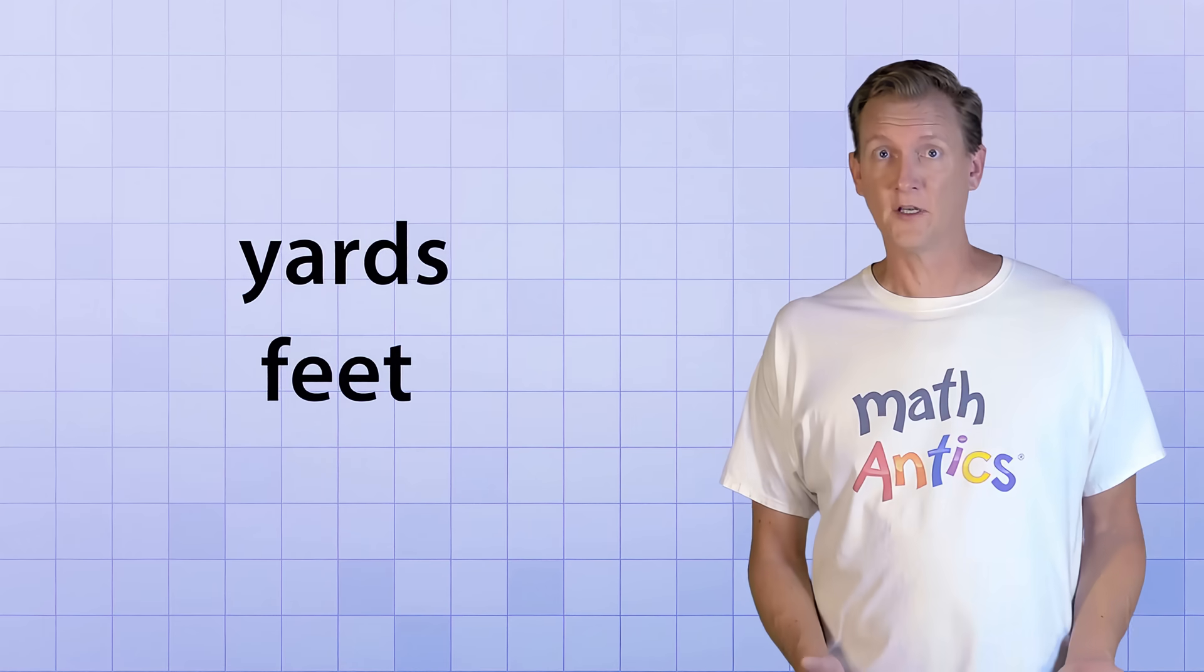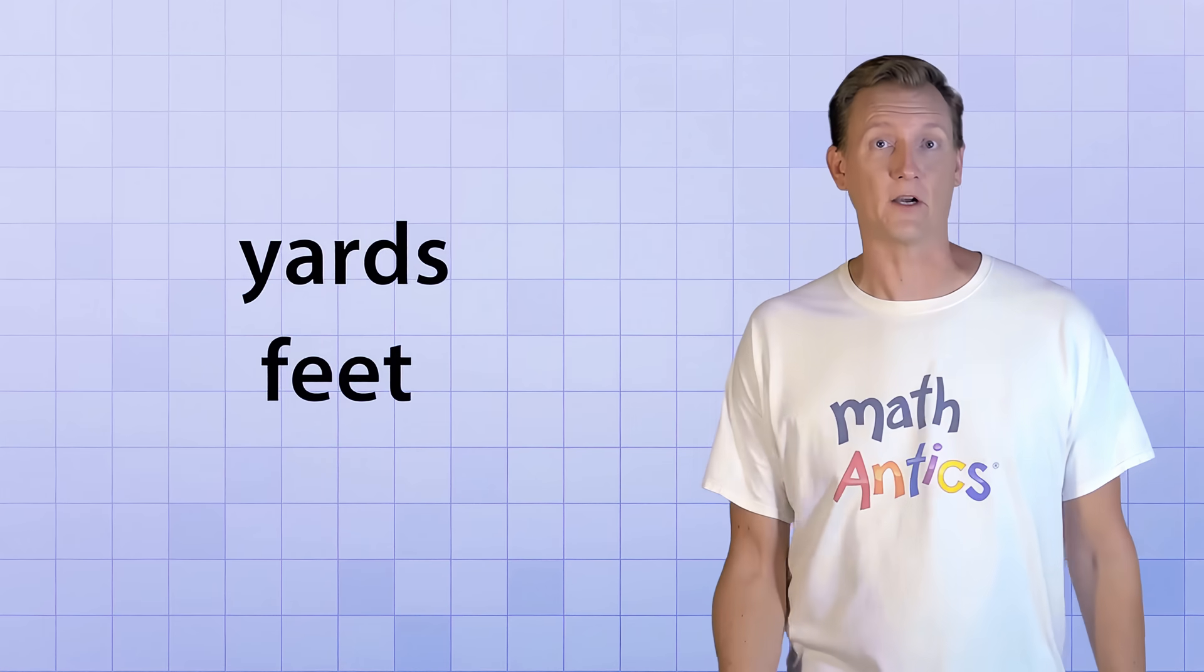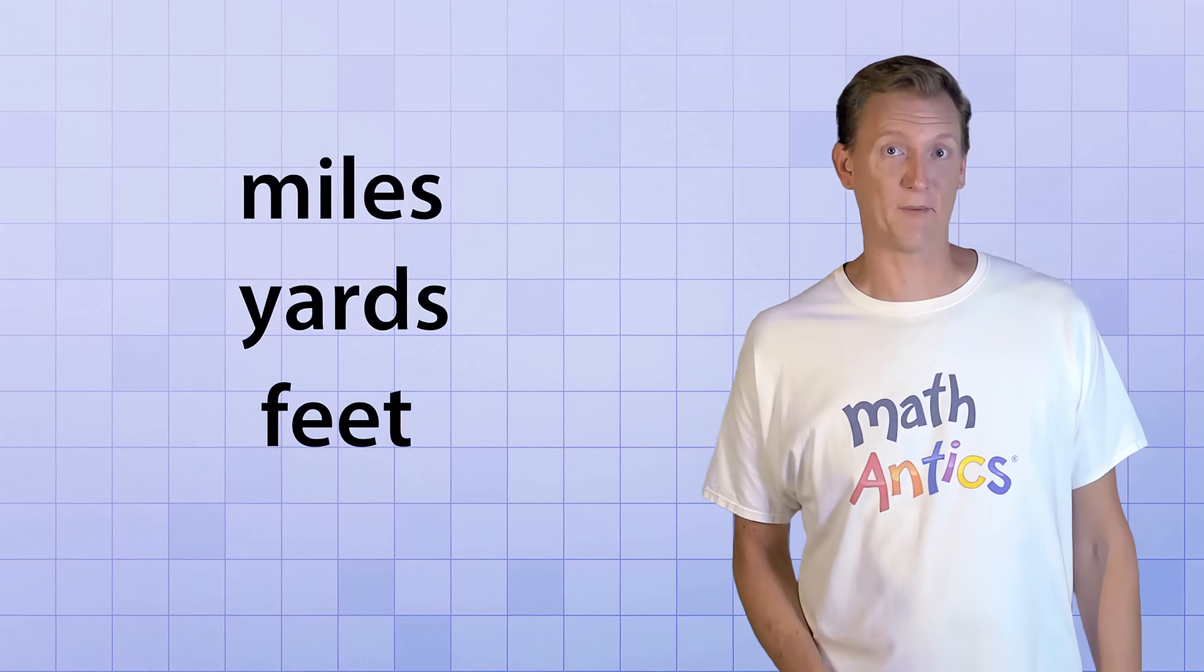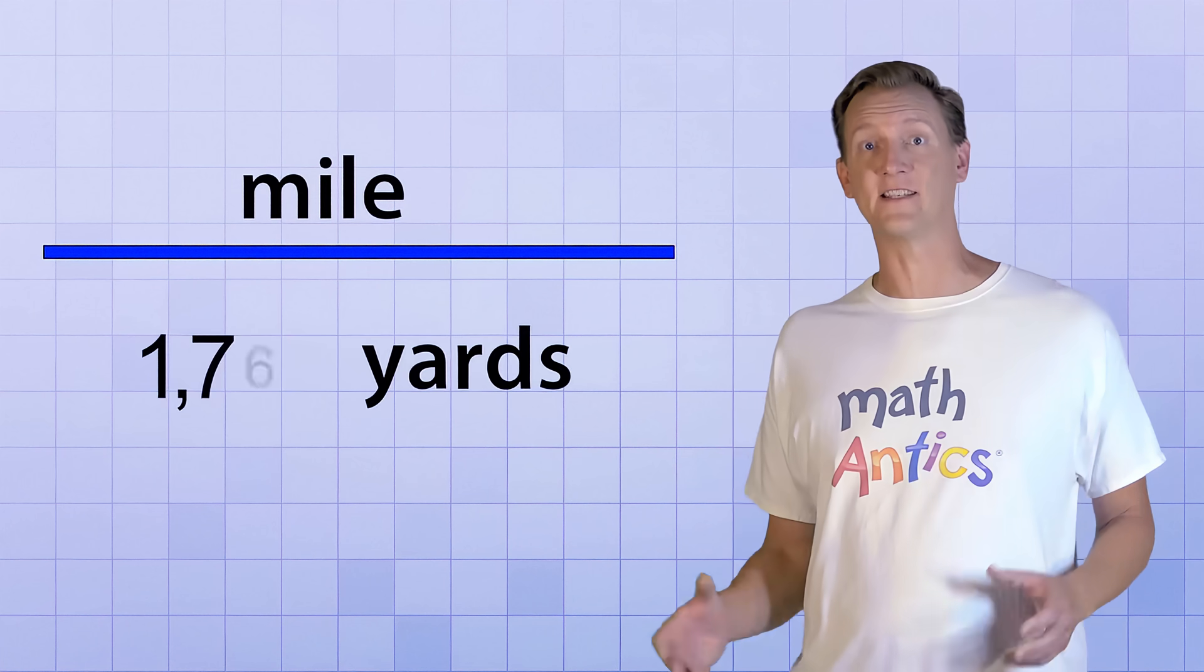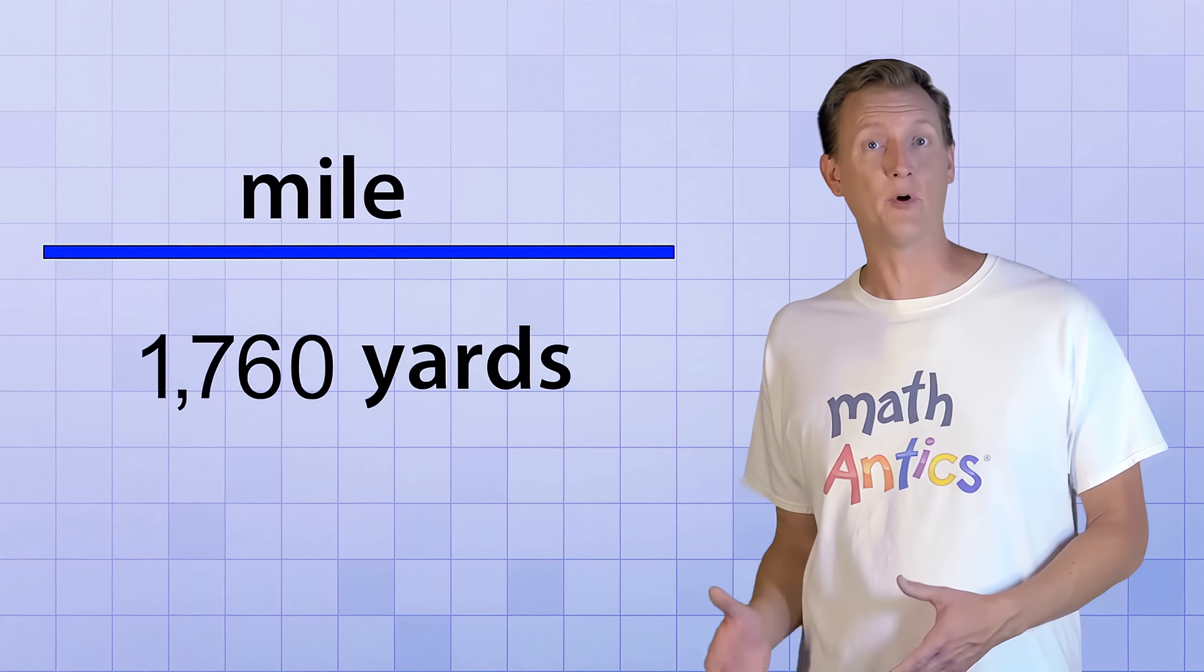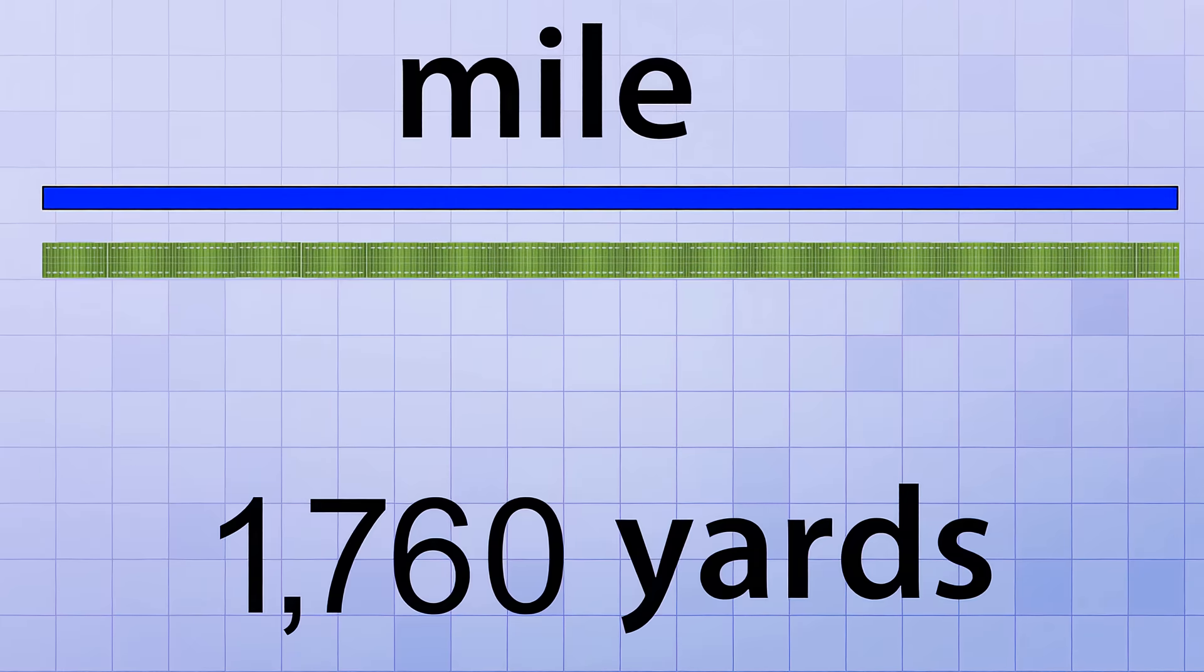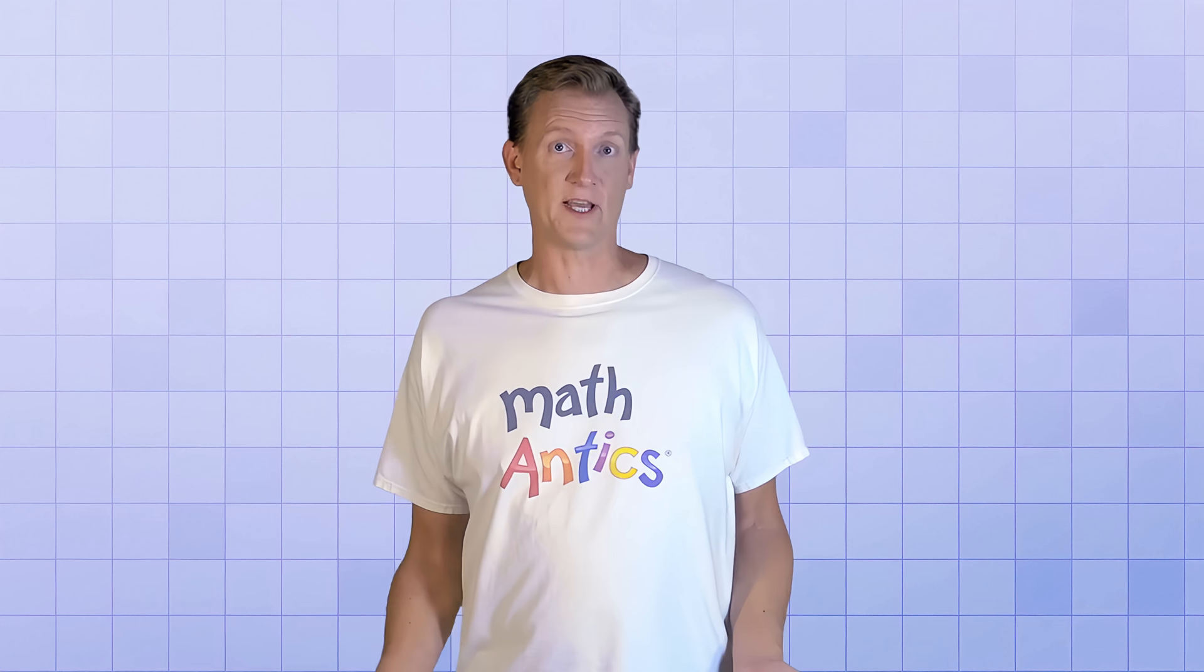So you can measure some pretty big distances with feet and yards. But what if you need a unit that's even bigger? Well, that's where miles come in handy. A mile is equivalent to 1760 yards. That's the distance you would get if you put 17.6 football fields end to end, which is pretty far. A mile is much bigger than the other three units we've looked at so far. If this is an inch, then this is a foot, and this is a yard, then this is a mile.